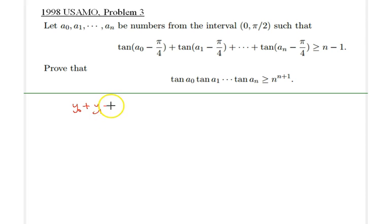We have our expression y sub 0 plus y sub 1 plus all the way to y sub n being greater than or equal to n minus 1. I will move that negative 1 to the left-hand side and everything on the left-hand side to the right-hand side except one of them.